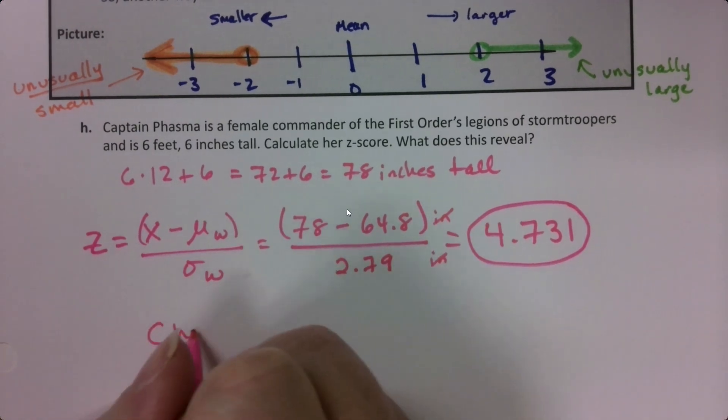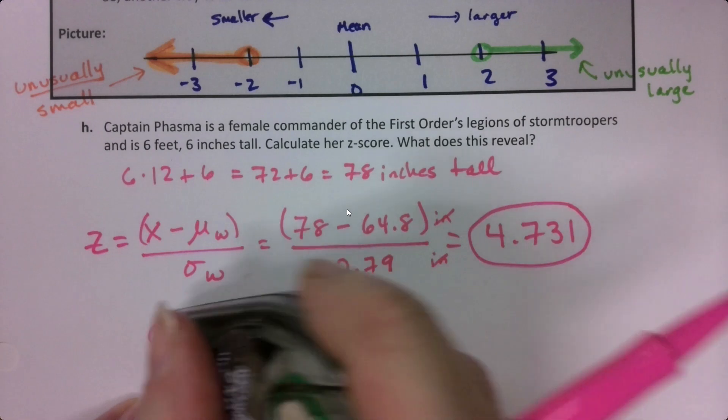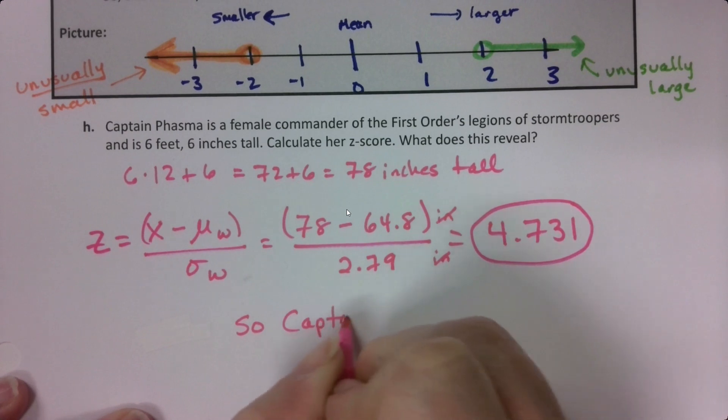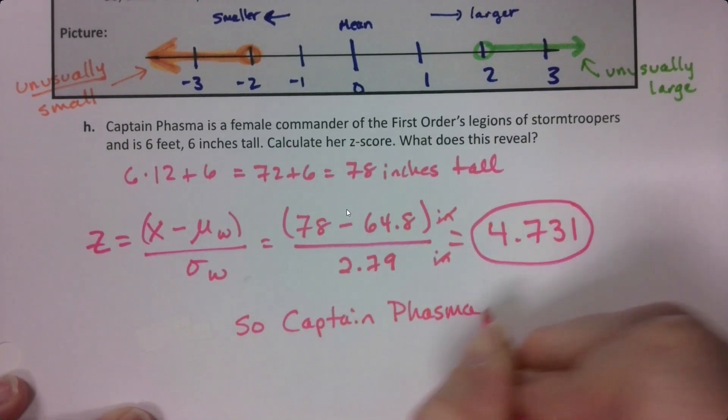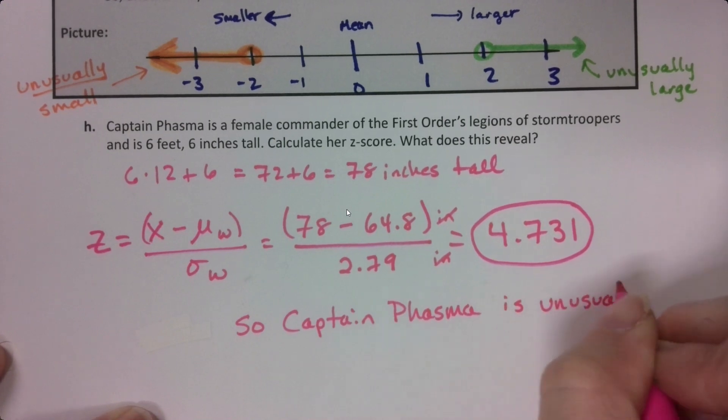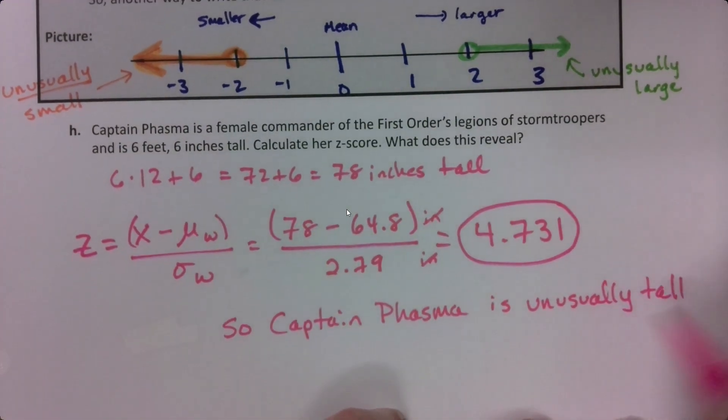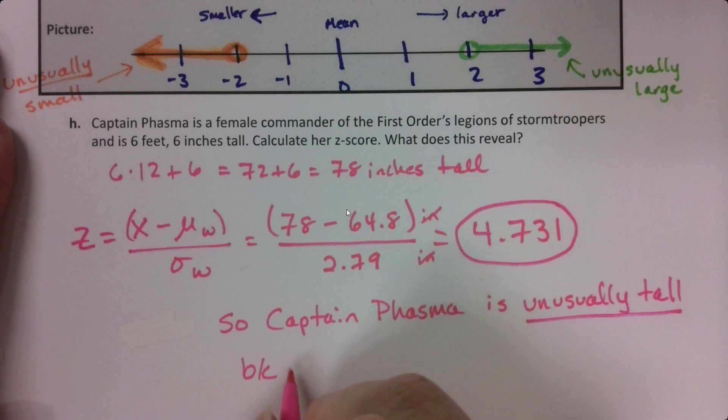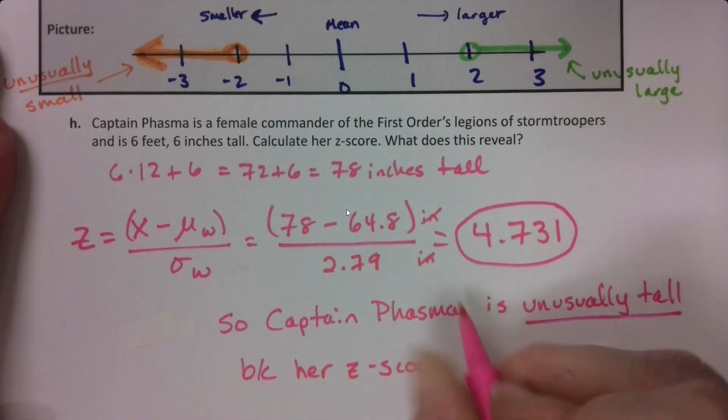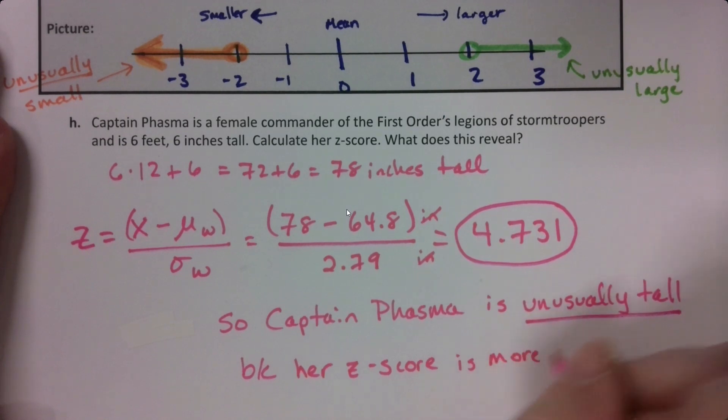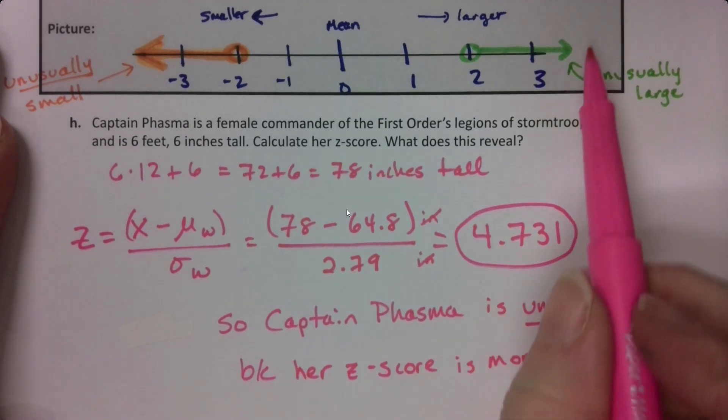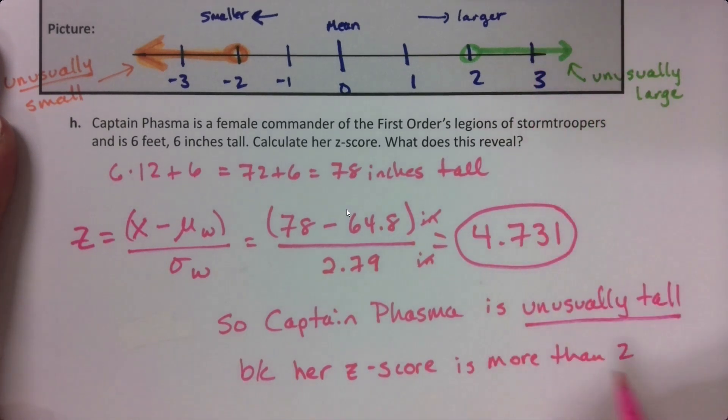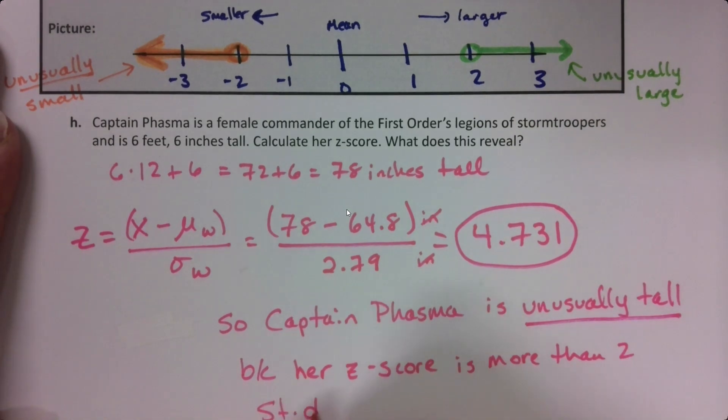So what does this reveal about her? Captain Phasma is unusually tall. If you've seen those movies, you know that's true. She's unusually tall because her z-score is more than two standard deviations. If you think about this number line, she's way over here, well past four, more than two standard deviations from the mean.